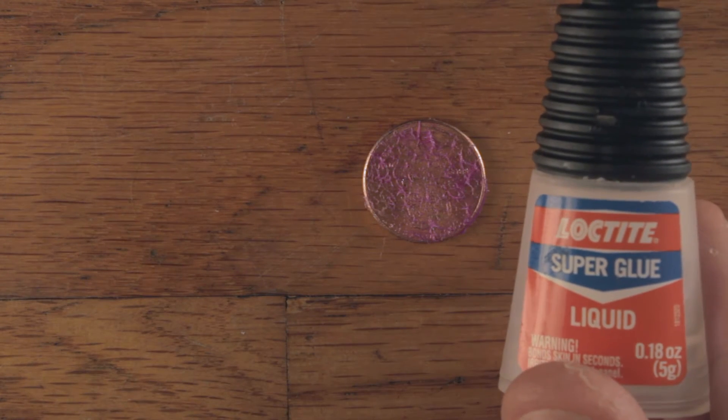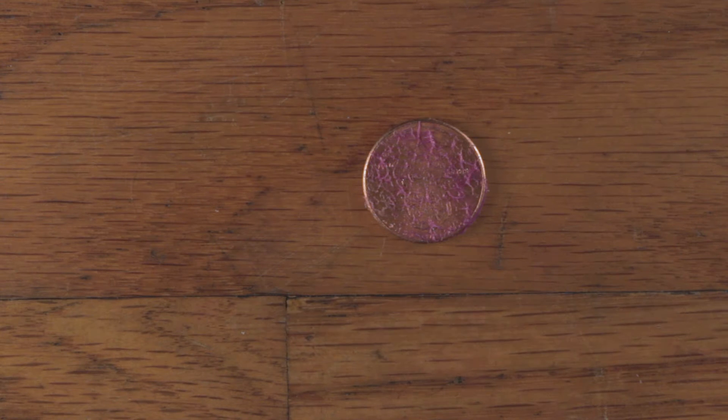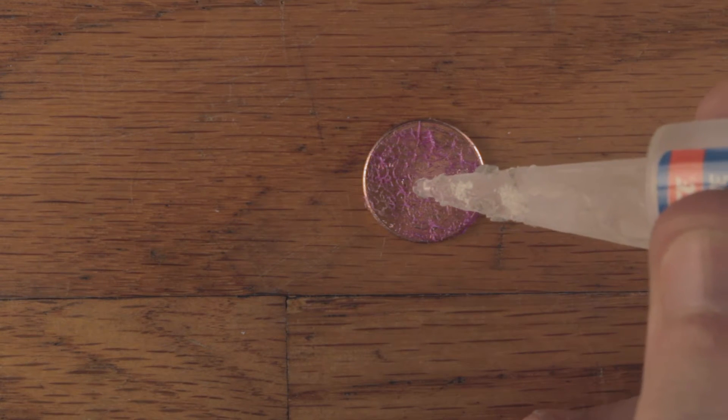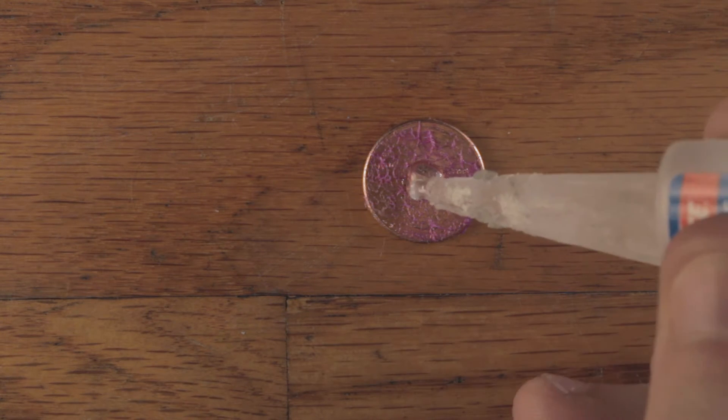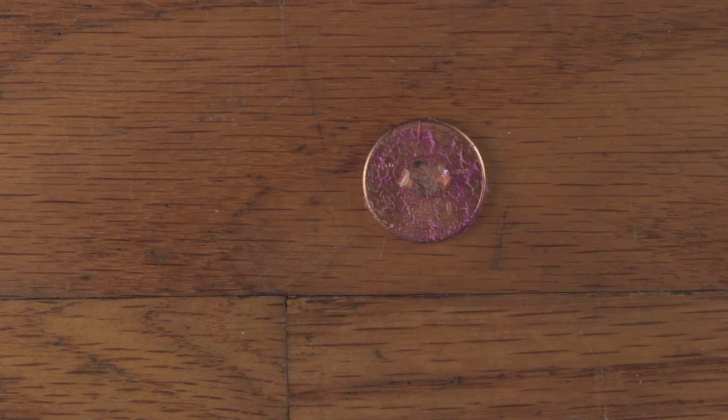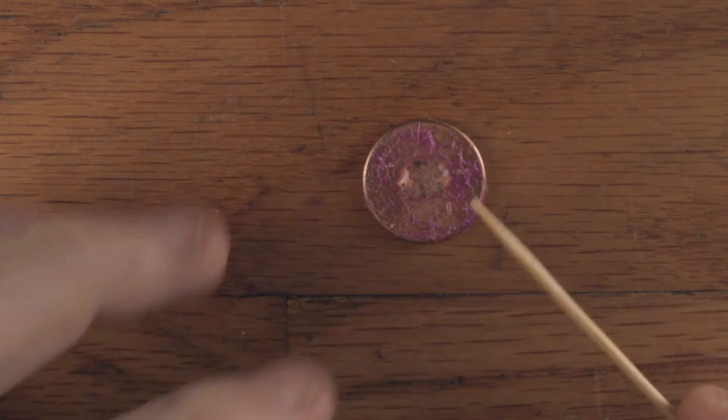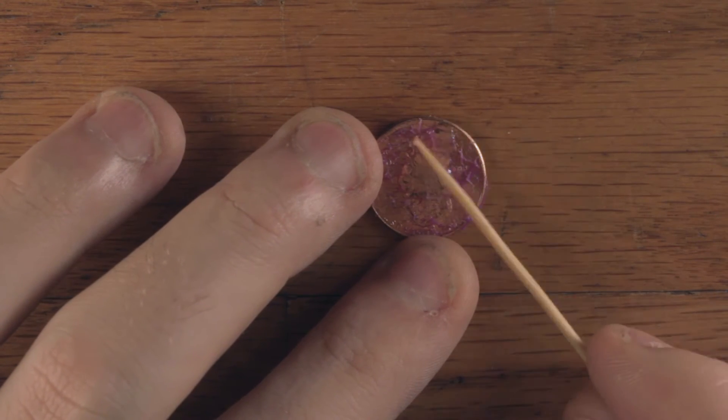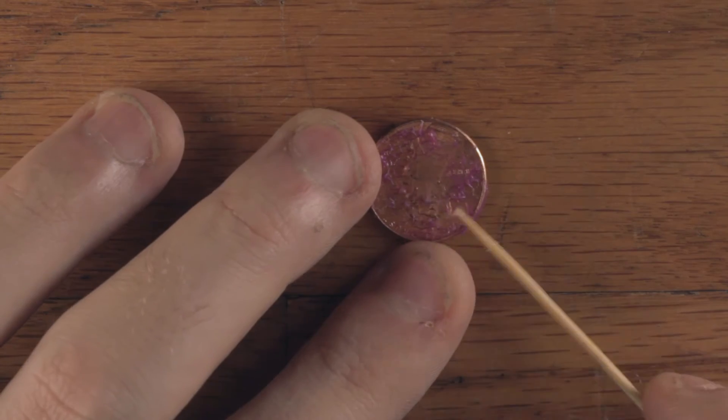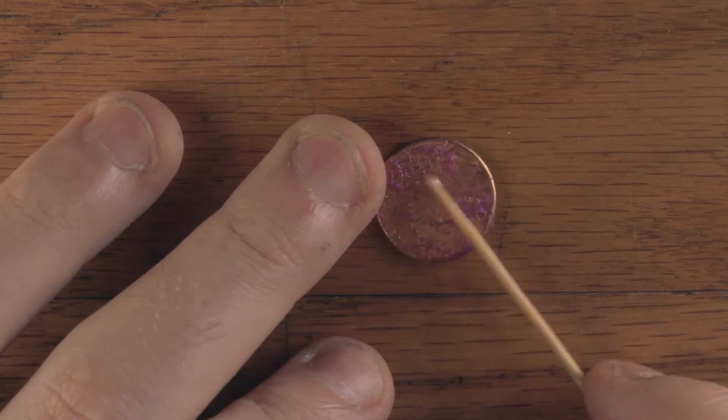Then you're going to take your super glue, and you're going to do two drips. Not anymore, just one and two. That's pretty good. And I will say now, don't worry if super glue gets on your fingers. It's going to get on your fingers. The penny's going to get stuck to your fingers.